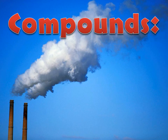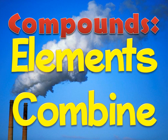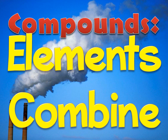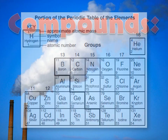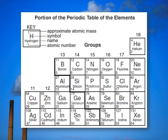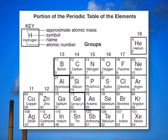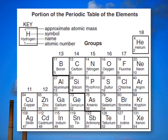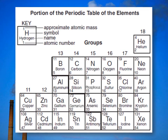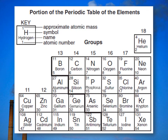It's important for us to remember what compounds are. Compounds are when different elements combine. Here's a section of the periodic table of elements. Notice that each element is represented by a symbol, either one or two letters. When these elements combine, compounds are formed.